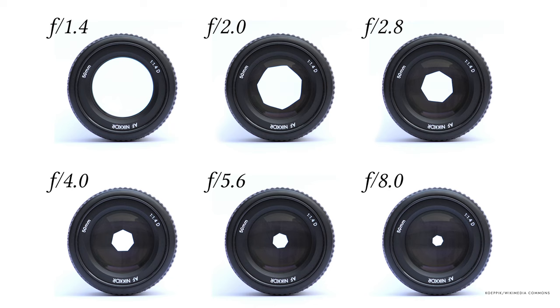A smaller f-number is a big opening that lets in more light, and a larger f-number is a small opening that lets in less light. Full f-stops in order from brightest to darkest — where each number left to right halves the volume of light passing through — are 1.4, 2, 2.8, 4, 5.6, 8, 11, 16, and 22.